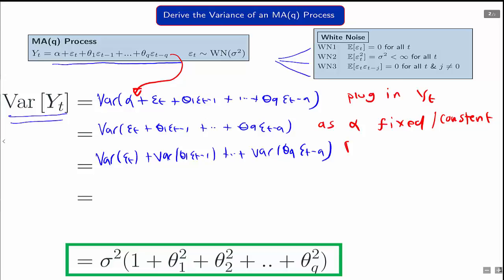Of each of these Q terms. And this follows by the uncorrelatedness assumption of the white noise. The variance of the sum is just the sum of all the variances. So recap your notes on the properties of the variance function.